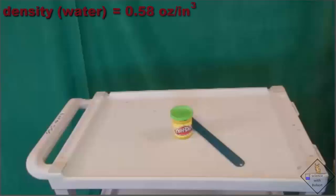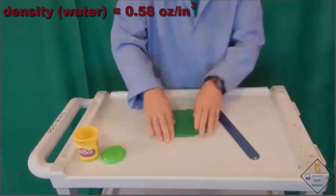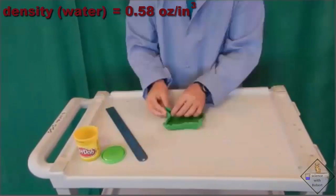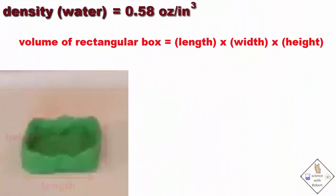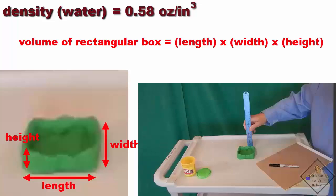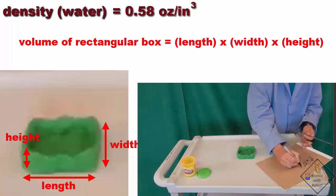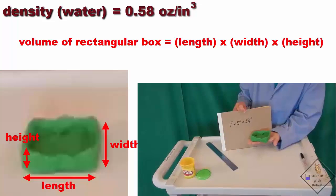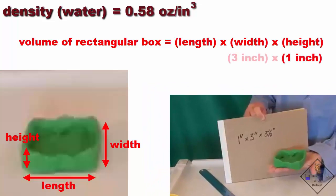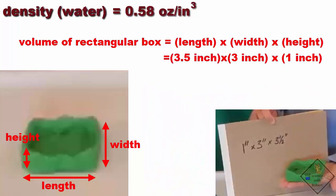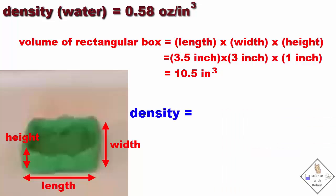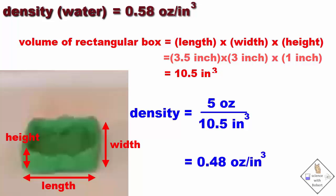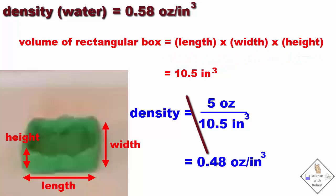What if we don't roll our Play-Doh into a sphere? What if we make its shape a little more interesting? Let's try making a rectangular box. The volume of a rectangular box is length times width times height. The volume of our rectangular box is 1 inch by 3 inches by 3.5 inches, which is 10.5 cubic inches. So the density of our rectangular box is 5 ounces divided by 10.5 cubic inches, or 0.48 ounces per cubic inch. That is a density less than the density of water — it should float.